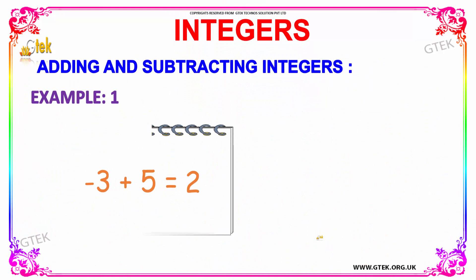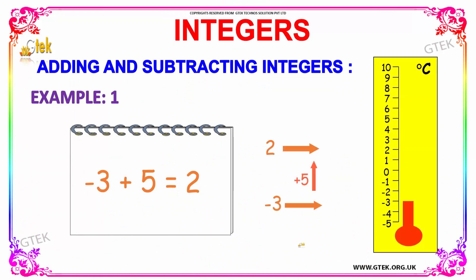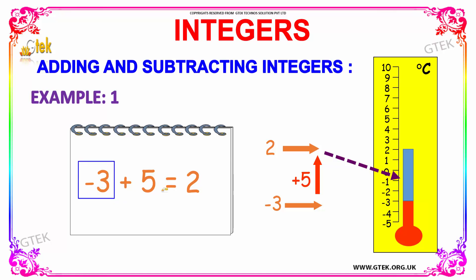Visualizing on a number line, we can add and subtract integers easily. We have an example in which we are supposed to add five to a negative integer, minus three. So minus three plus five is equal to two. Visualizing it on a number line, we have minus three, and adding five to it we move one, two, three, four, and five steps. So this becomes the result — that is, our answer is two.